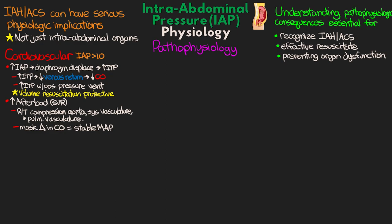The increased afterload can be detrimental to patients who have heart failure or other types of cardiac dysfunction. On top of the aorta being compressed, we also have compression of the IVC. Decreased venous return results from IVC compression in the abdominal cavity, as well as from diaphragm displacement. This pressure on the femoral veins also leads to decreased blood flow, the potential for peripheral edema, and high risk for DVTs.